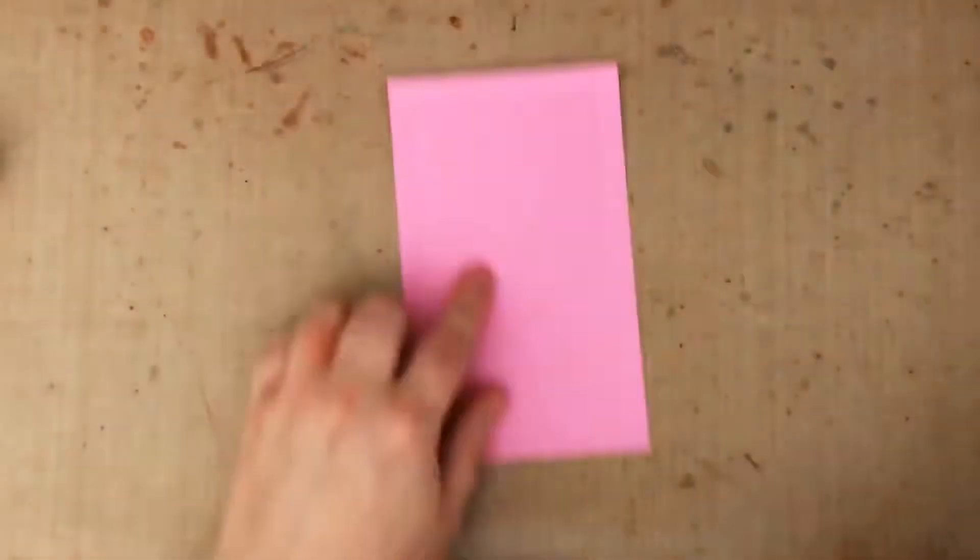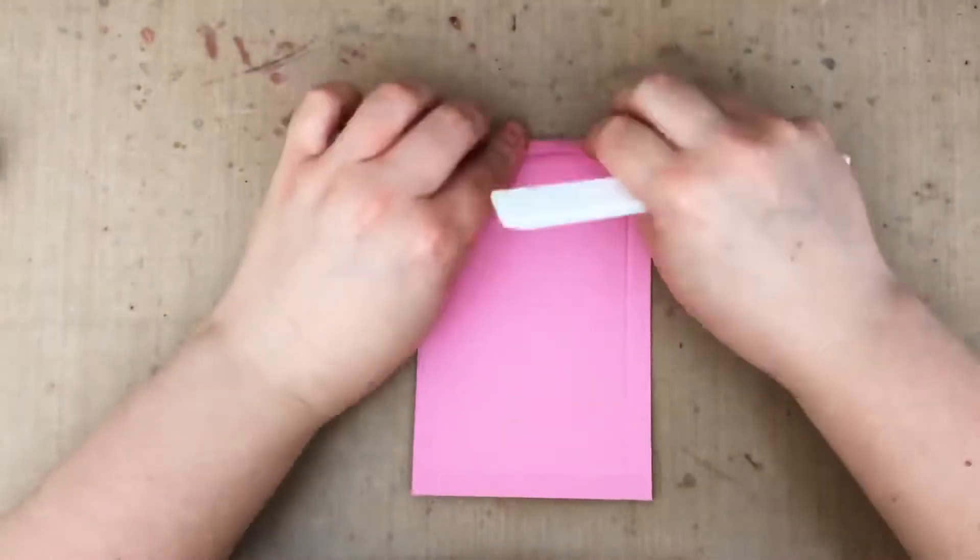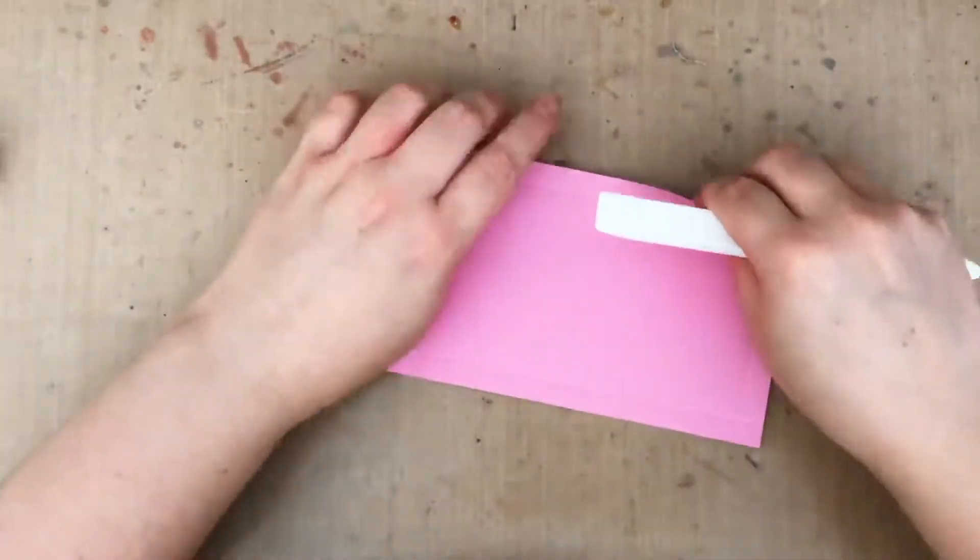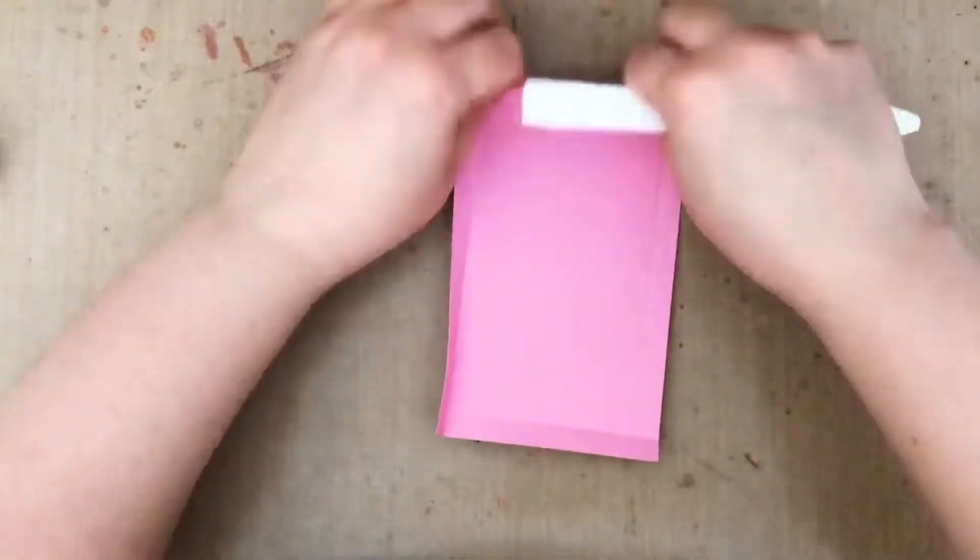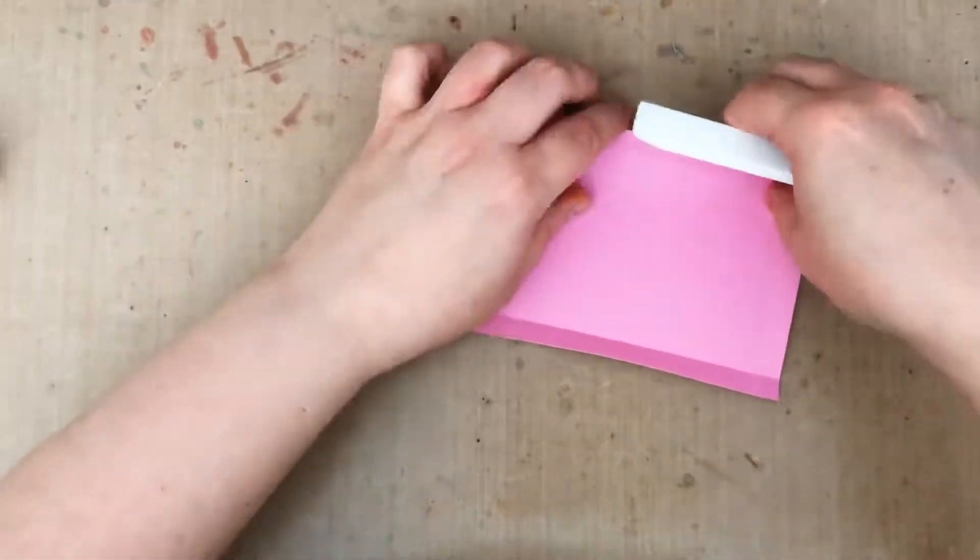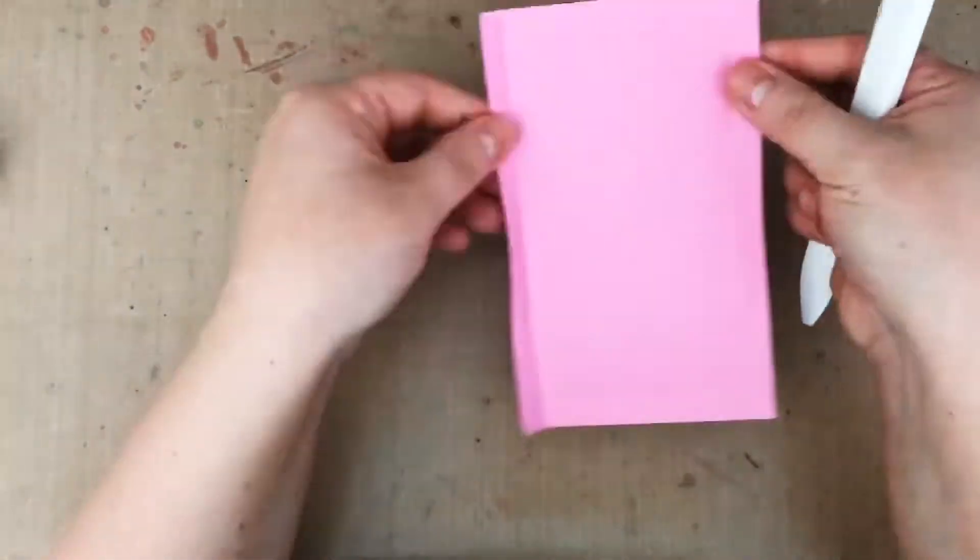Now to create my little tray that's going on the inside of my card, I've got a piece of pink cardstock that is three and three quarters by six. I'm scoring at 3/8 of an inch on each side, so I'm scoring, then I'm rotating 90 degrees, scoring again, etc.